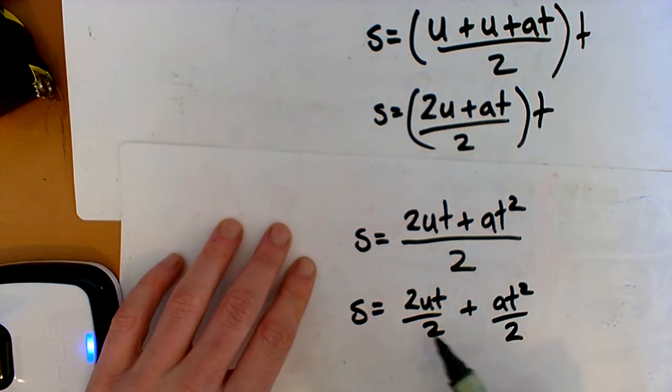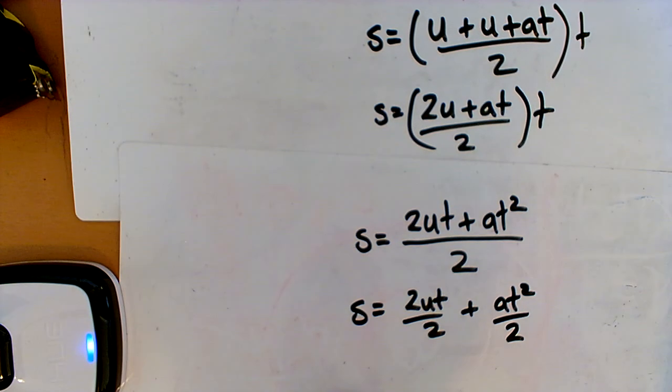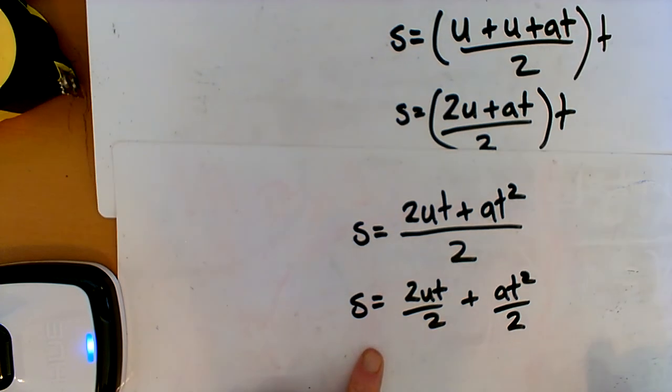So S is equal to 2UT over 2 plus AT squared over 2. Okay. So all I've done is I've just split that up. We know we can do that. We could add them both together. That's the common denominator between the two. But now we have it a little bit better.